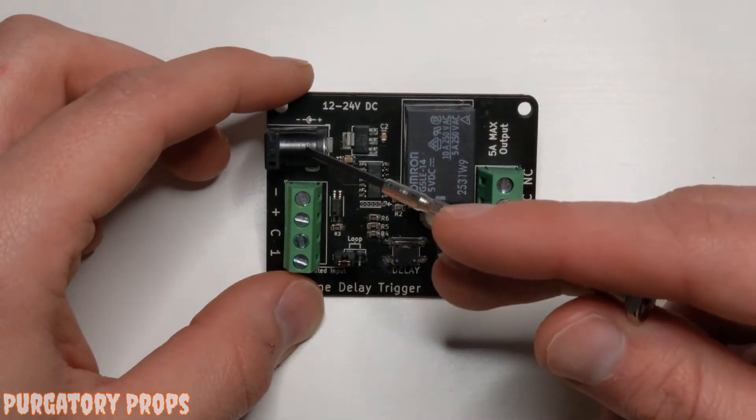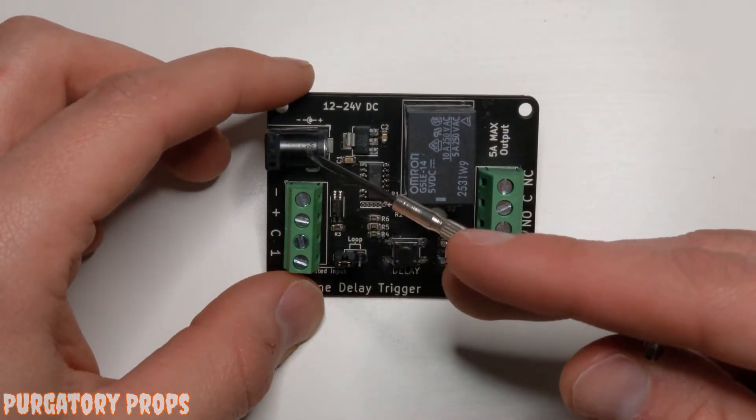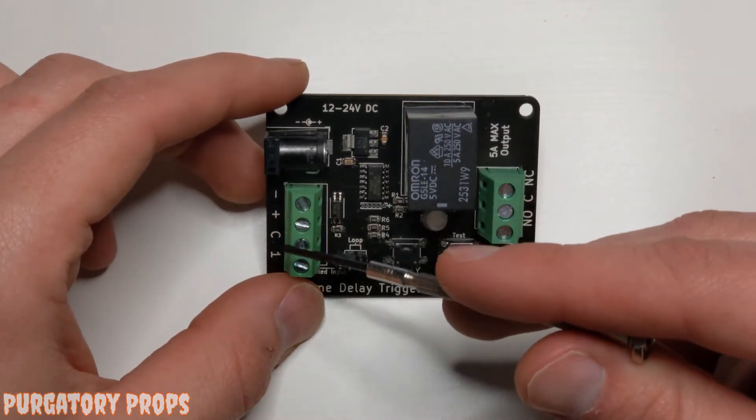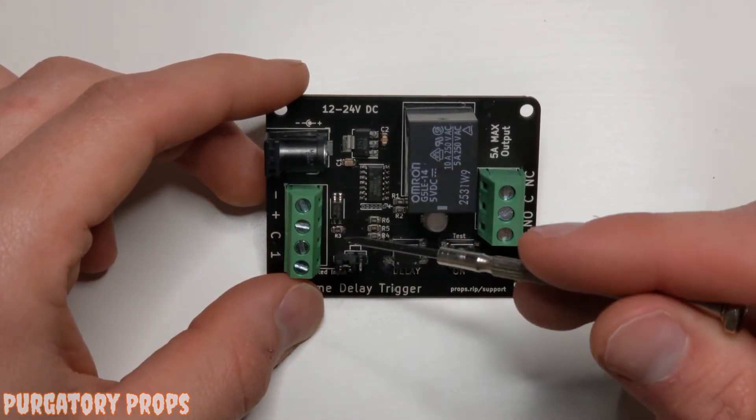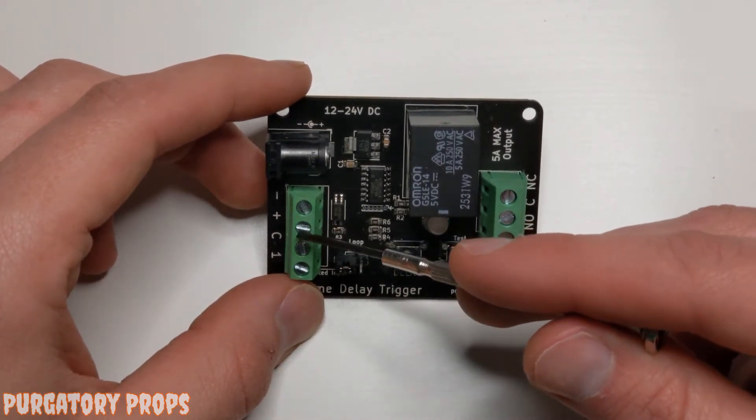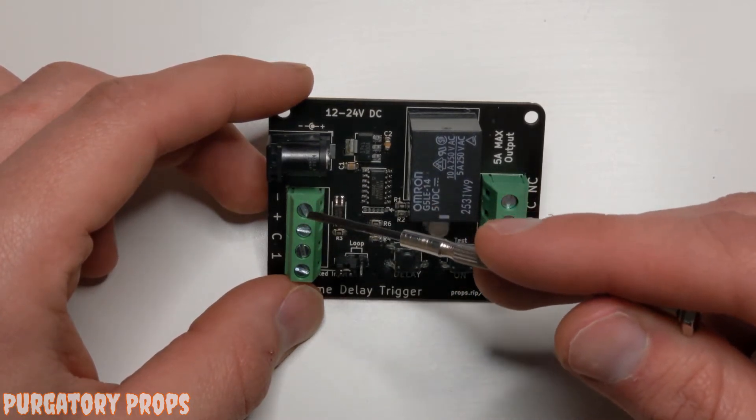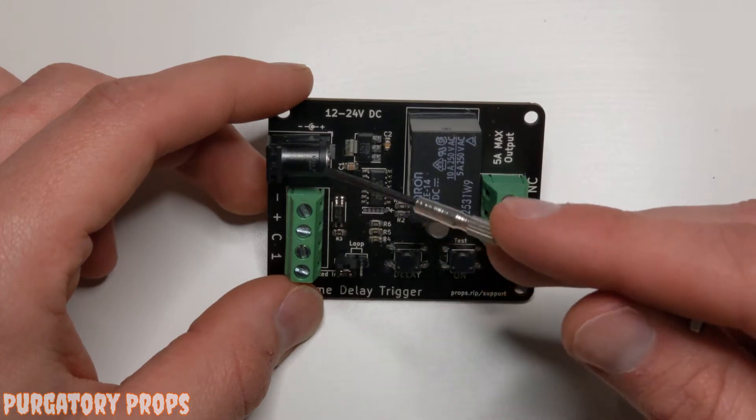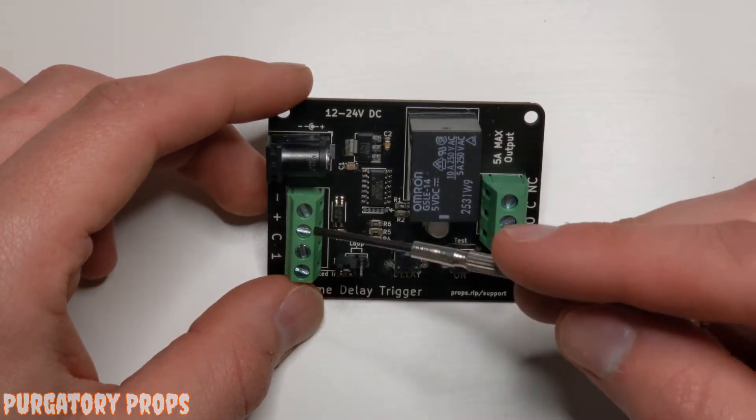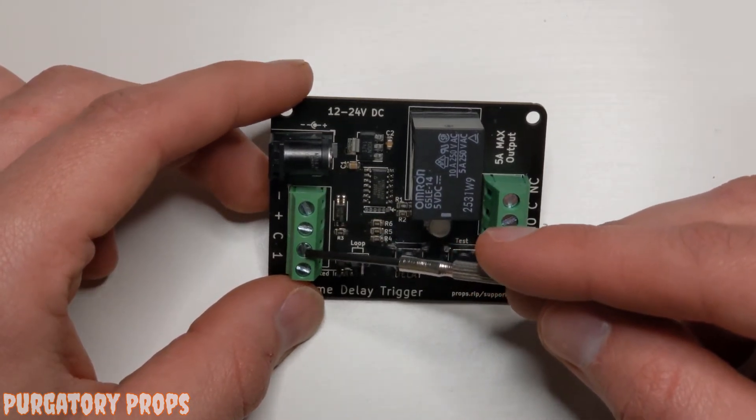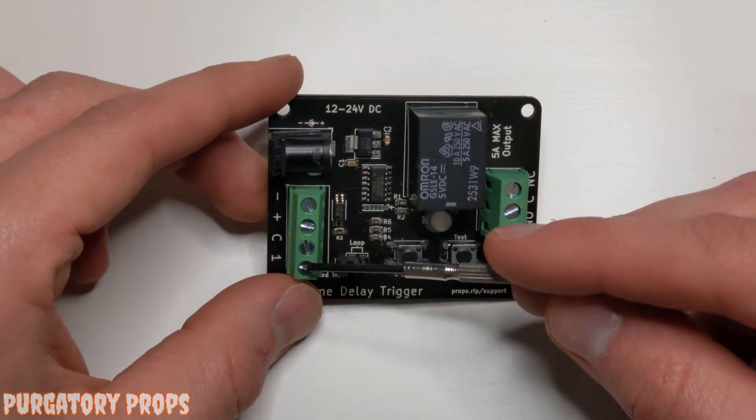Over here you have the DC jack for input. This can take 12 to 24 volts DC. Down here is the isolated input terminal. You have the negative and positive which can be used to send power to a trigger or sensor that you're using. It can also power the time delay trigger. The C here is the common terminal and then input 1.